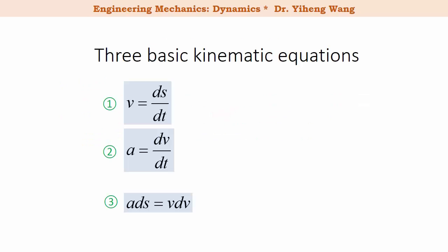Before we start the discussion of erratic motion, let's again take a look at the three basic kinematic equations. These tell us that if the position s is the original function f of time t, then the velocity v is the first derivative function f', and acceleration a is the second derivative function f''. We learned from calculus how to graph an original function as well as its derivative functions.